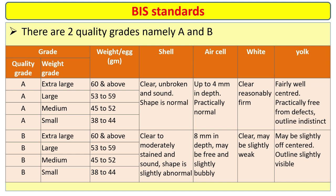There are two quality grades, namely A and B. Quality Grade A weight range: extra large — weight of egg 60 grams and above. You can see all the quality grades and details in this slide.